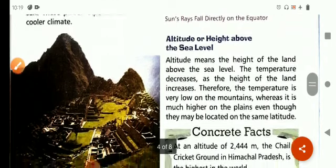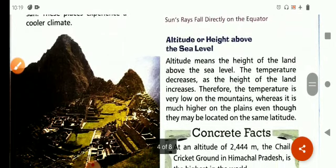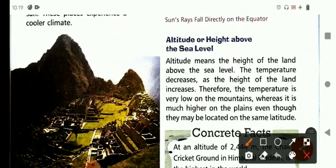Now altitude, or height above the sea level, this is also a factor that affects the climate. Altitude means the height of the land above the sea level.